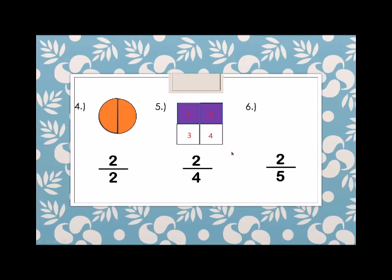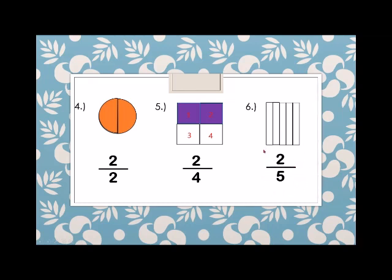Another example is 2 fifths. We have this figure. How many parts? 1, 2, 3, 4, and 5. Therefore, the denominator is 5. And how many parts are we going to shade? 2. So we have to shade 1 and 2. This is 2 fifths.